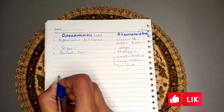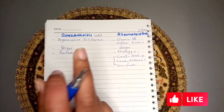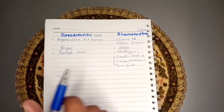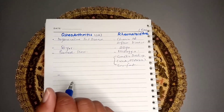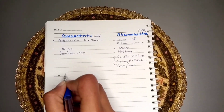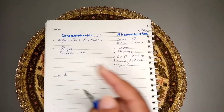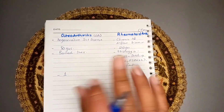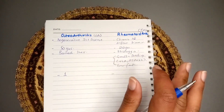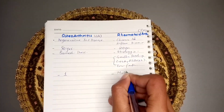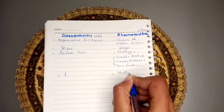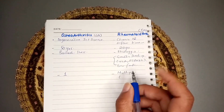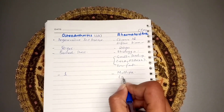In osteoarthritis, the disease typically affects one particular area or joint, while rheumatoid arthritis affects multiple joints all over the body, mainly affecting the small joints.